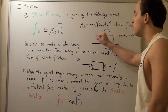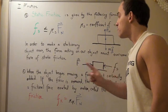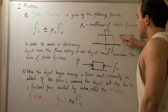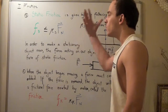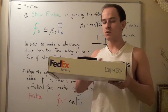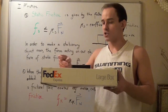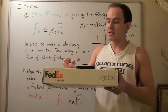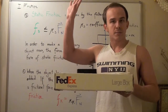When the object begins moving, a force must continually be applied. If I stop pushing, the object will stop moving. For example, with this eraser: right now it's not moving, so there's a net force of zero. If I push hard enough to overcome the static friction force, it begins moving. But notice that when I stop applying the force, the object stops moving.